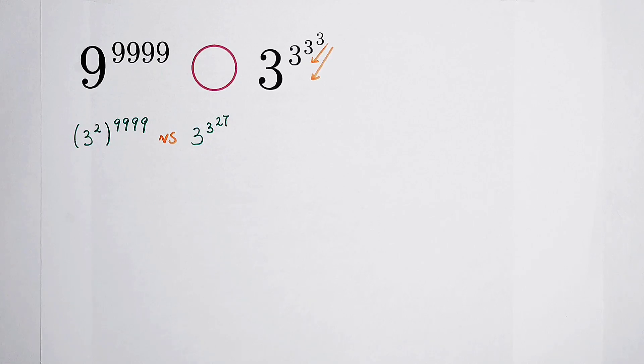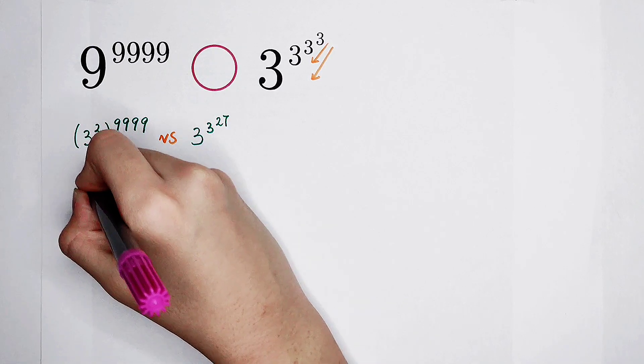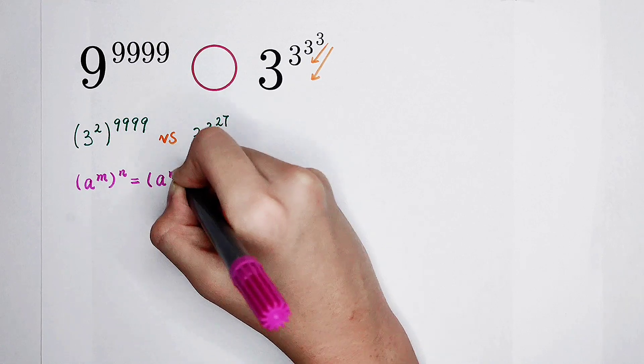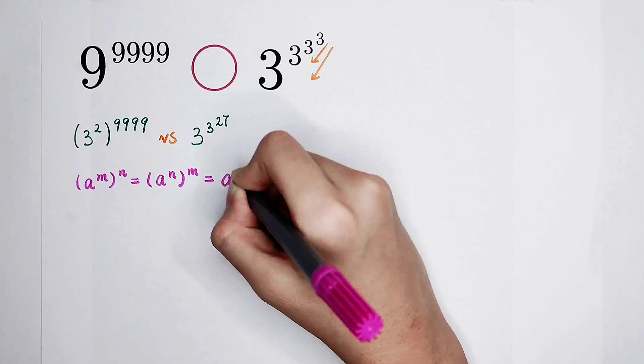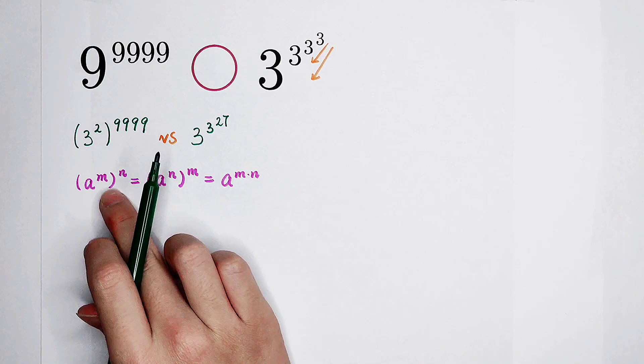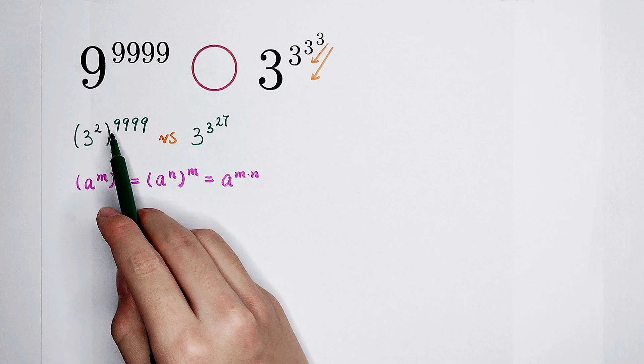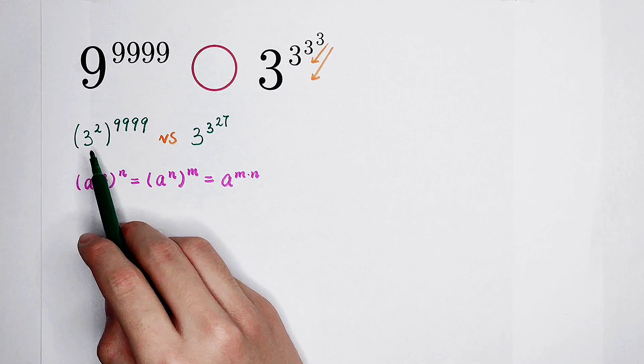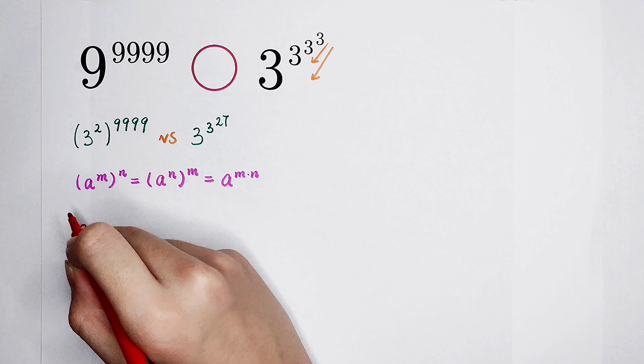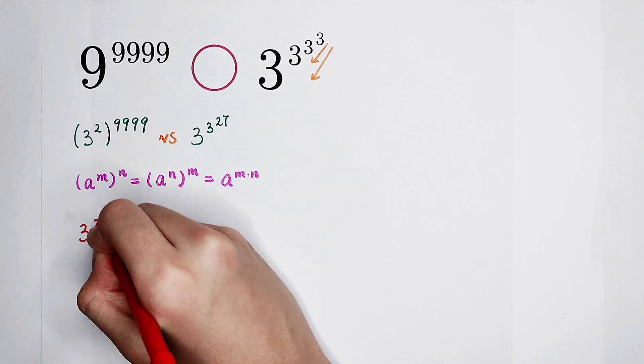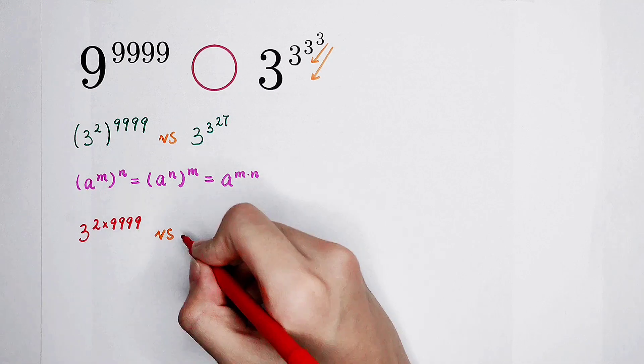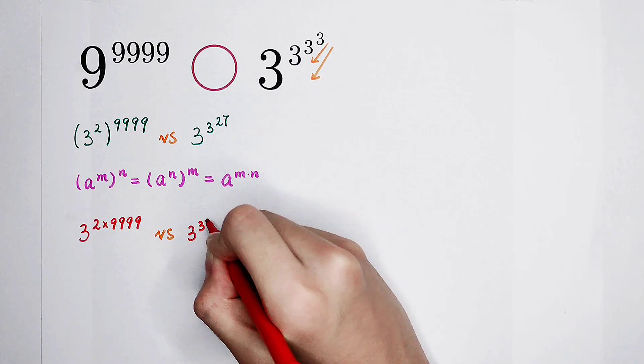What should we do? We have to use the formula. (a^m)^n = (a^n)^m = a^(mn). So our next step is the left side becomes 3 to the power of 2 times 9999 and the right side is still 3 to the power of 3 to the power of 27.